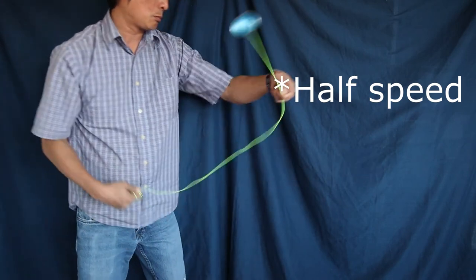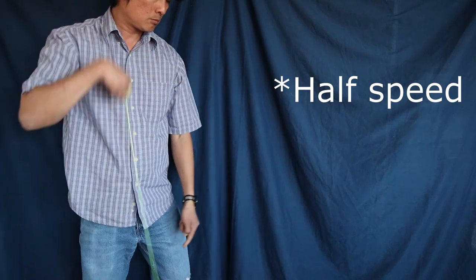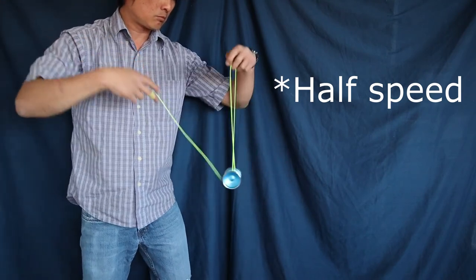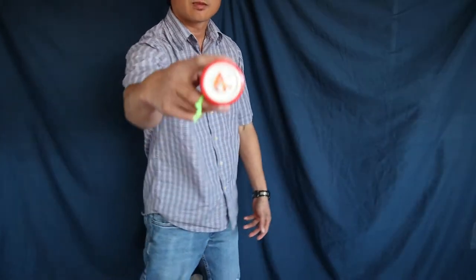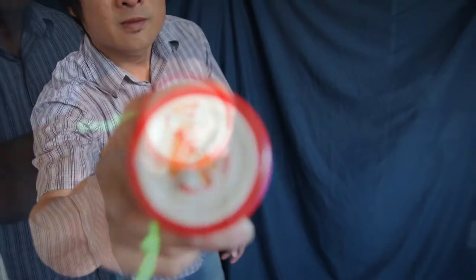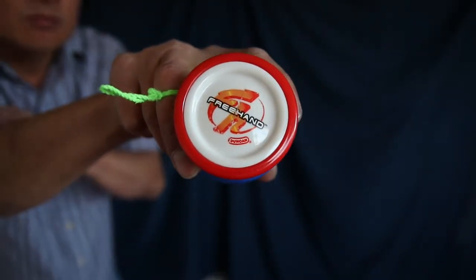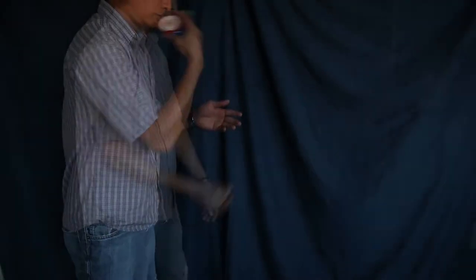So I originally did this combo back in the responsive yo-yo days. So that was in the early 2000s. There was not really any unresponsive yo-yos out at that time. So I'm doing this combo with one of my favorite responsive yo-yos from the days, the Duncan freehand one. And this is the same trick essentially on a responsive yo-yo.